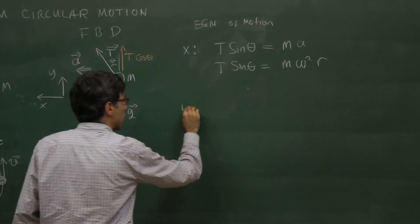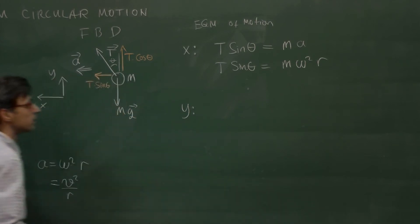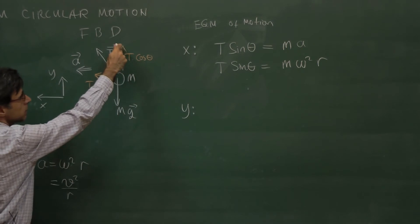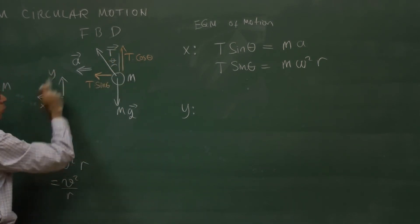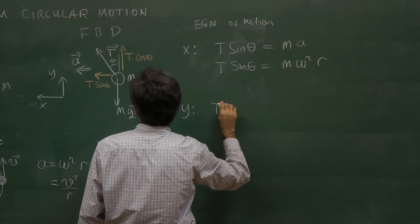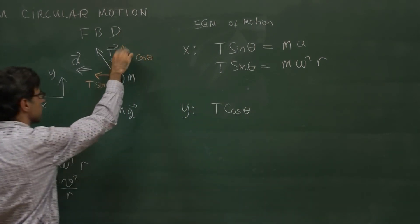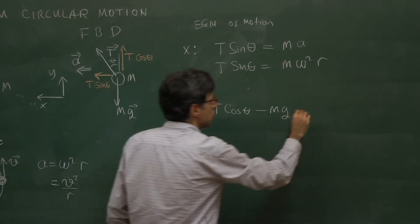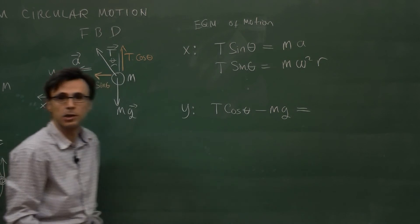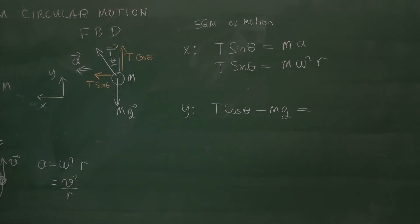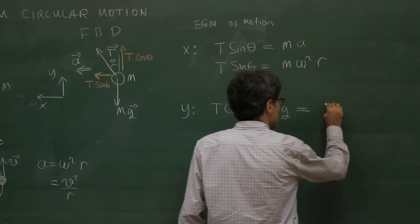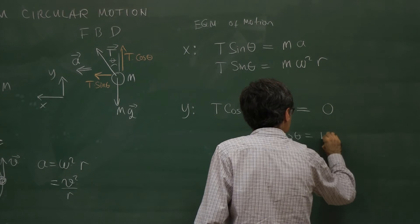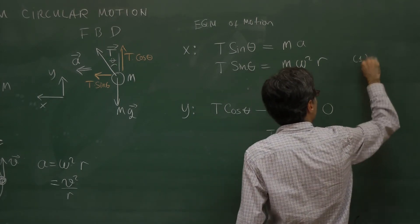That is our first equation. The equation of motion in the y-direction uses both the vertical tension component and the weight. Taking upward as positive, T cos θ minus mg equals m times the acceleration in the y-direction, which is zero. Therefore T cos θ = mg. This is our second equation.